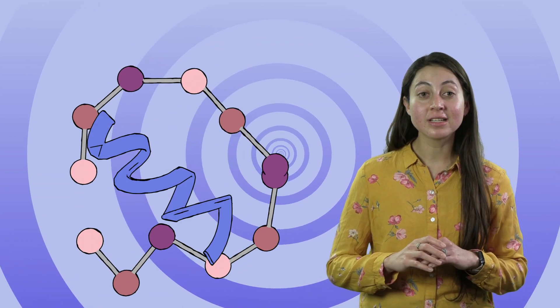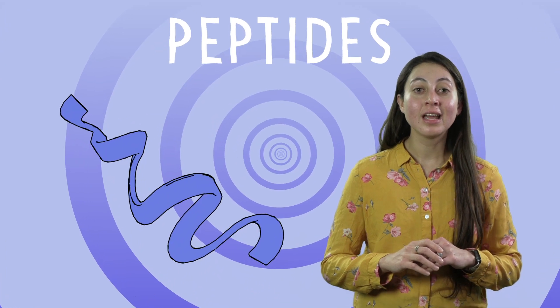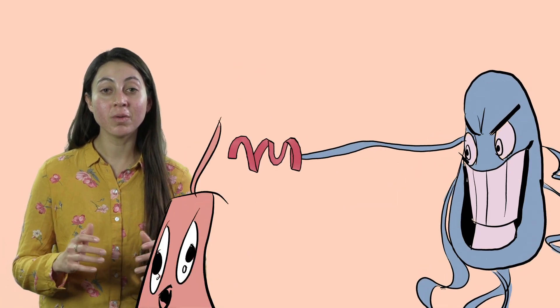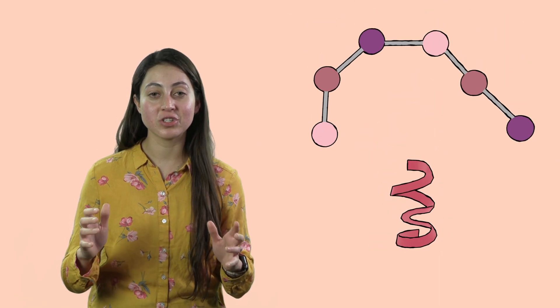Small proteins are called peptides, and these can also have fascinating properties. Here is an example of an antimicrobial peptide produced by some bacteria so they can kill competing bacteria. It's essentially a small protein that is made by larger protein machines.